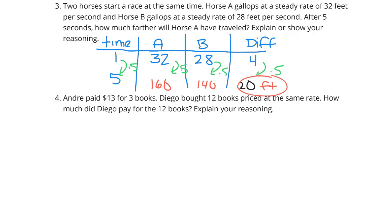Question 4. Andre paid $13 for 3 books, and Diego bought 12 books priced at the same rate. How much did Diego pay for the 12 books? Explain your reasoning. Well, I'm going to go with the table again here. If I have my cost and I have my books. $13 for 3 books. Now, 12 books at the same rate, I could break this down and do 13 divided by 3, or I could recognize, wait a minute, if it's the same rate, 3 times 4 gets me to 12. So, he bought 4 times the number of books at the same price, so I can take 13 and multiply it by 4 to get to my solution of $52 for those 12 books.